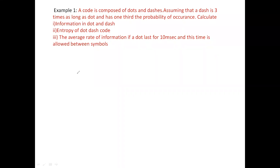Let us solve some problems on entropy and measurement of information. We have an example: a code is composed of dots and dashes, assuming that a dash is three times as long as a dot and has one third probability of occurrence. We are supposed to calculate the information present in dot as well as the dash, the average information content in the code, and the average rate of information. The dot lasts for 10 milliseconds and a gap is allowed in between the symbols.